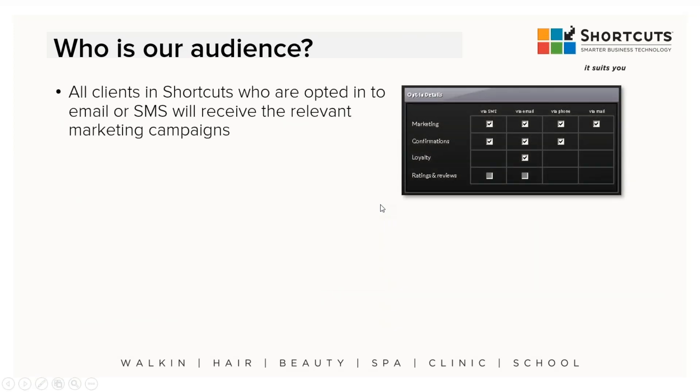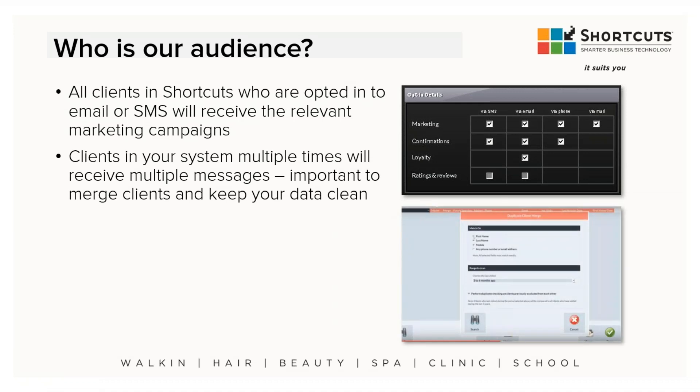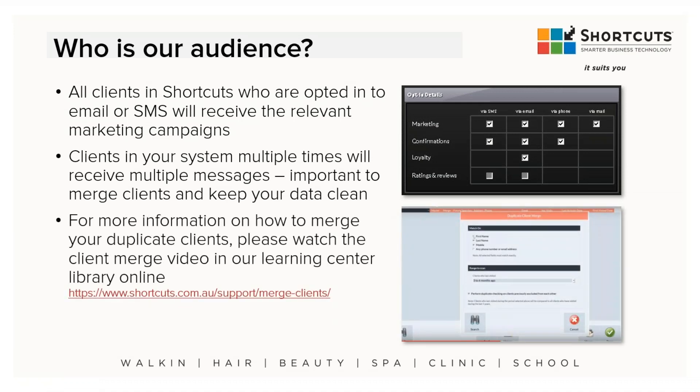Who exactly is getting these emails or text blasts, and how do you know they're set up properly? In your Shortcuts point of sale system, in Shortcuts Fusion, there are opt-in options for your customers. If you go to the client card you'll normally see this on the main card portion. On the right side there are checkboxes — yes I want to get text or email marketing campaigns, or yes I want to get text or email confirmations. If you have Spotlight, the Shortcuts ratings and reviews, you can even opt in or out of that.